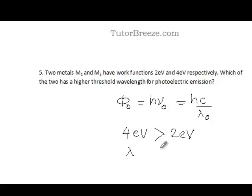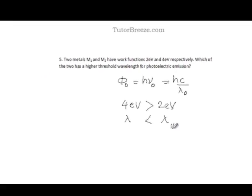Lambda for this case should be less than lambda for this case. This is the threshold value of the wavelength.